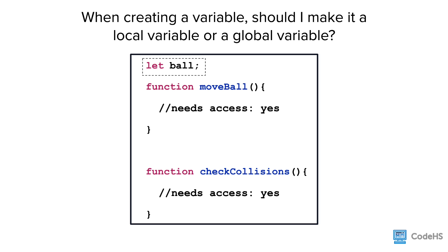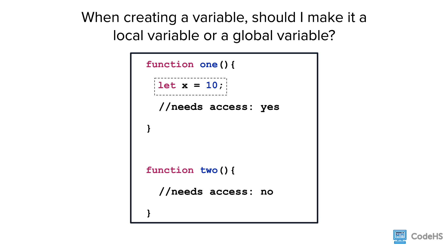Another example when we might want to use a global variable is in an animated graphics program. We might want the moveBall function and the checkCollisions function to both have access to the graphics variable ball. So we could declare the variable ball as a global variable so that multiple functions can access it.